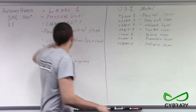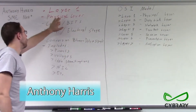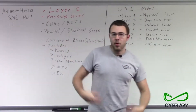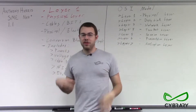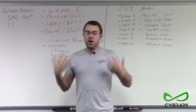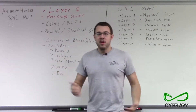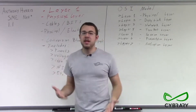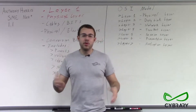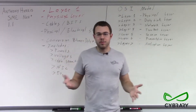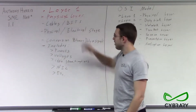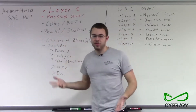Our first layer is going to be our physical layer, or layer one. The physical layer is all about cables and bits — physical things that we can hold and measure. It includes everything from electrical impulses to wireless data traveling back and forth. We may not think of wireless signals as physical things, but they are. Even though they're radio signals, they're still physically measurable, so they fall under layer one. This is our physical and electrical stage.